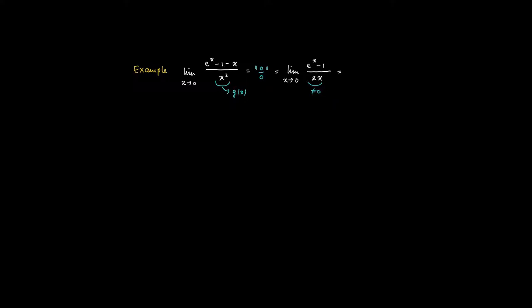Again the numerator goes to 0, and eˣ - 1 goes to 0. So we may apply L'Hôpital's rule again. This equals the limit as x goes to 0 of eˣ, which is the derivative of eˣ - 1, divided by 2, the derivative of 2x. In the end we find that this limit is one half.